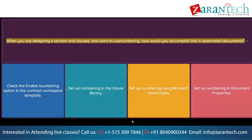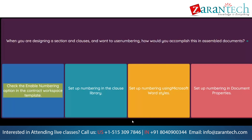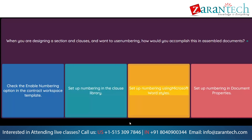Question: When you are designing sections and clauses and want to use numbering, how would you accomplish this in assembled documents? Option 1: Check the enable numbering option in the contract workspace template. Option 2: Set up numbering in the clause library. Option 3: Set up numbering using Microsoft Word styles. Option 4: Set up numbering in document properties.